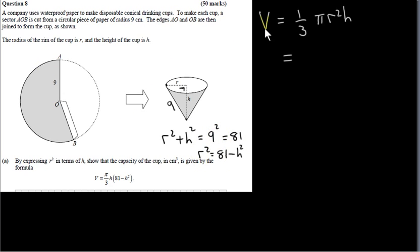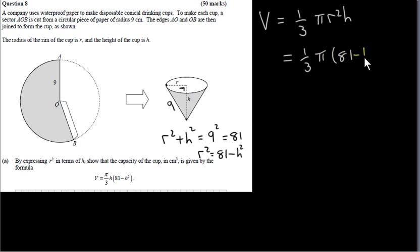So we are going to get the volume of the cone in terms of h. For R squared we write 81 minus h squared, and that gives us exactly what we need.